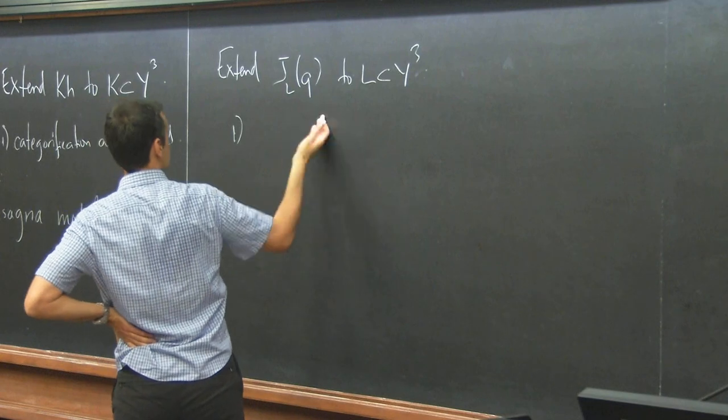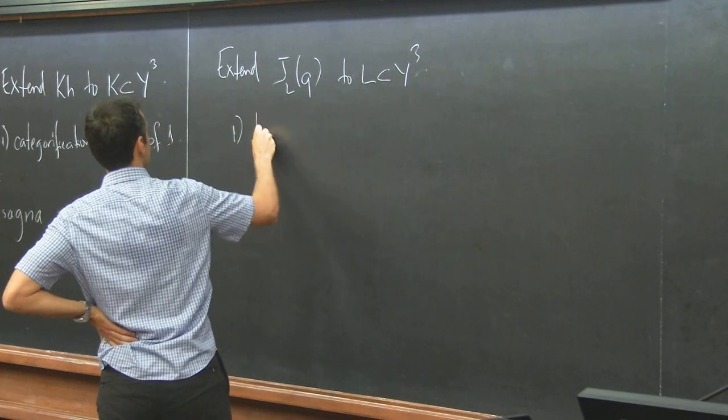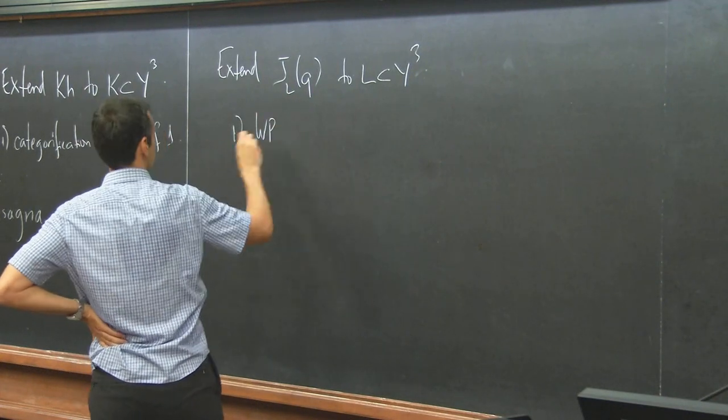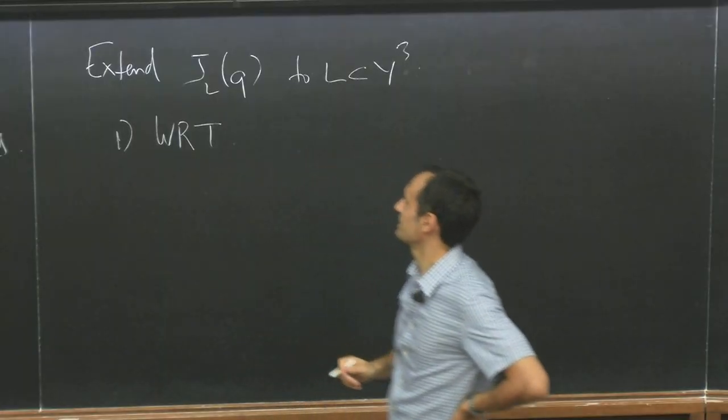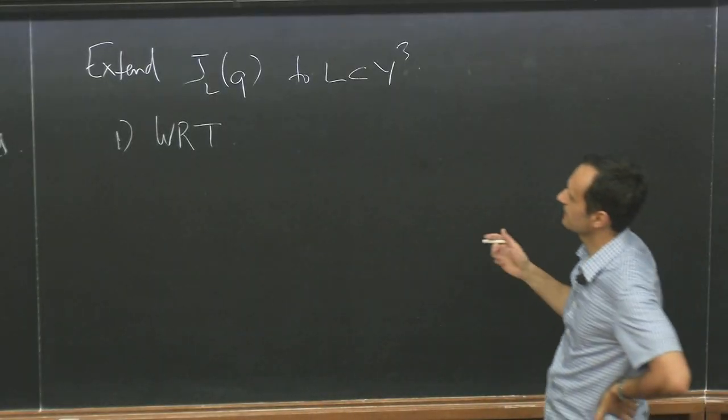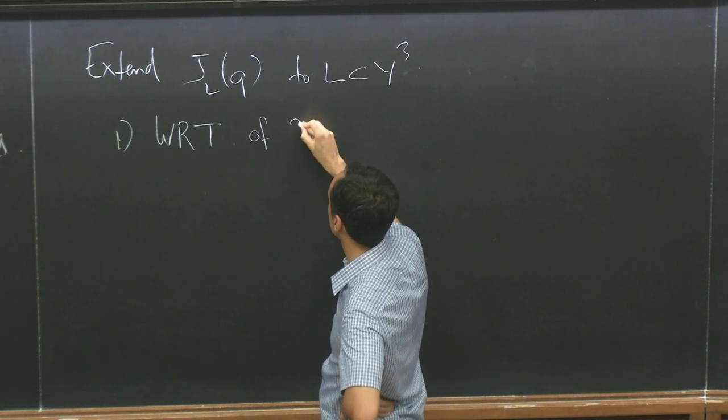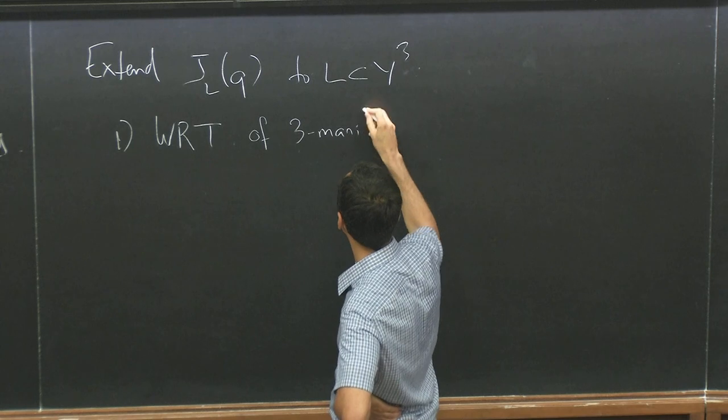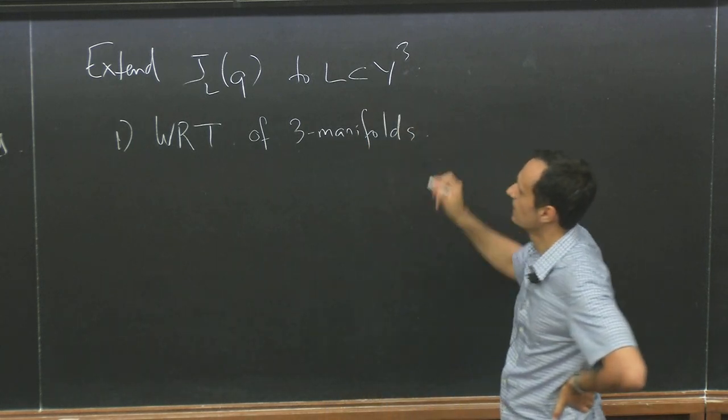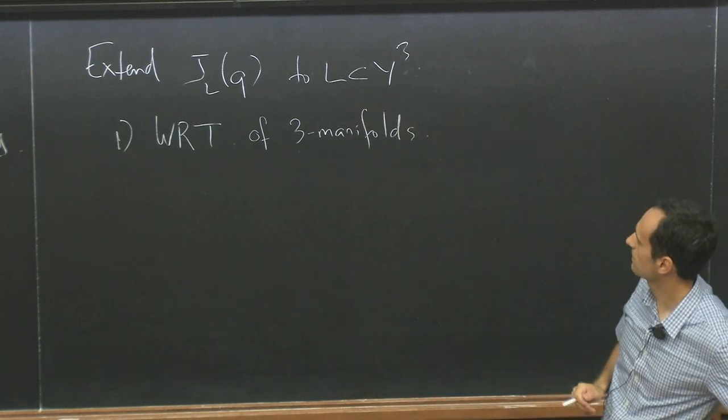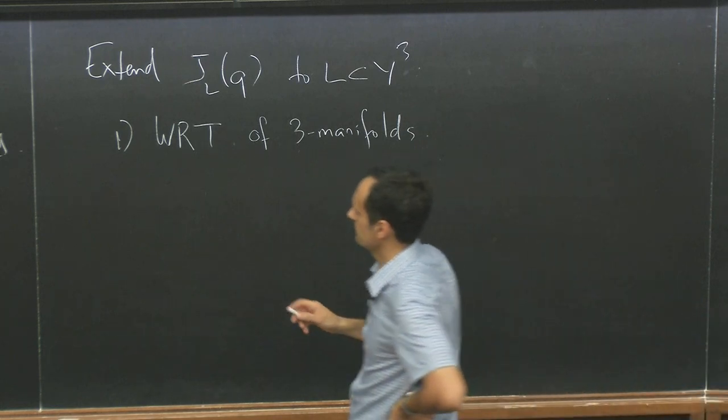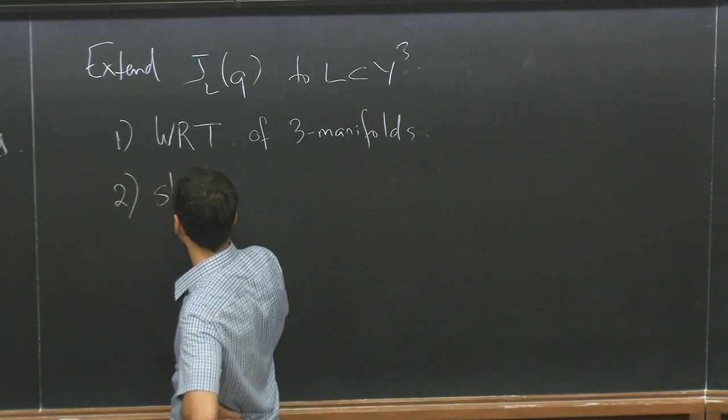Categorification of roots of unity has been done for these polynomials. Without categorification, just looking at the roots of unity and taking cables of the link, you can get the Witten-Reshetikhin-Turaev invariants of three manifolds. So that's the usual way. But there's also a simpler way, which is the skein module.